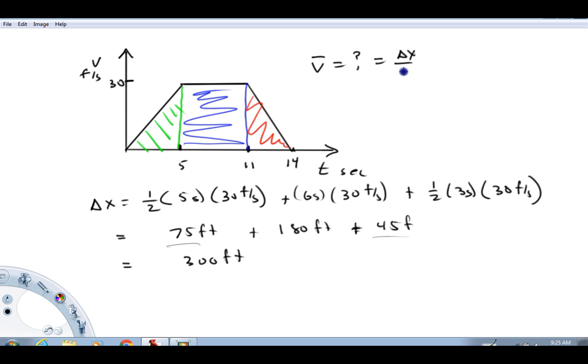Here's how we can calculate it. Velocity equals delta x over delta t. On the interval given, the total delta x is 300 feet, and the total delta t is 14 seconds. Calculating that, I get approximately 21.4 feet per second.